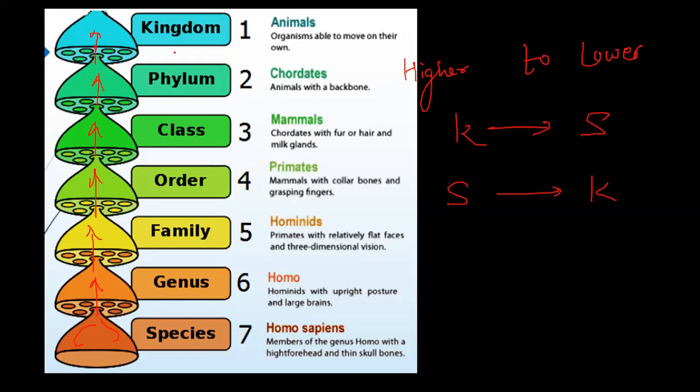Human classification example: Kingdom — Animalia; Phylum — Chordata; Class — Mammalia; Order — Primates; Family — Hominidae; Genus — Homo; Species — Homo sapiens sapiens. This is a complete taxonomic classification of humans.